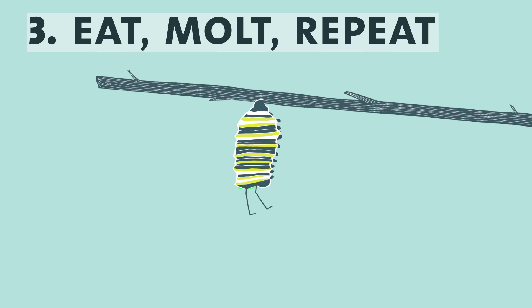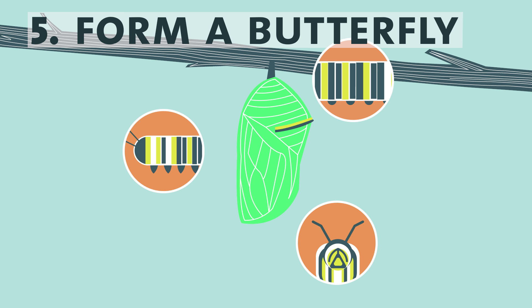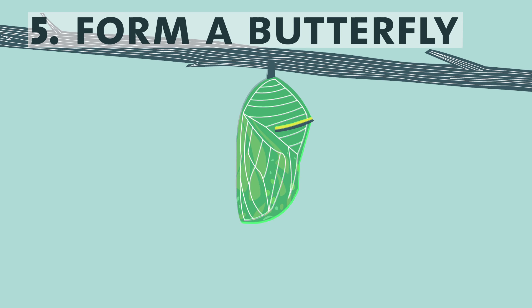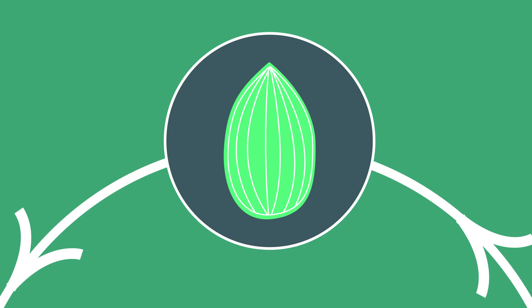It attaches itself to a plant and sheds its skin one last time to reveal its chrysalis. Inside, the tissues that made up the caterpillar rearrange to form a head and body, six legs, and four wings. Then, when its own genes and the climate indicate the time is right, out pops the butterfly.